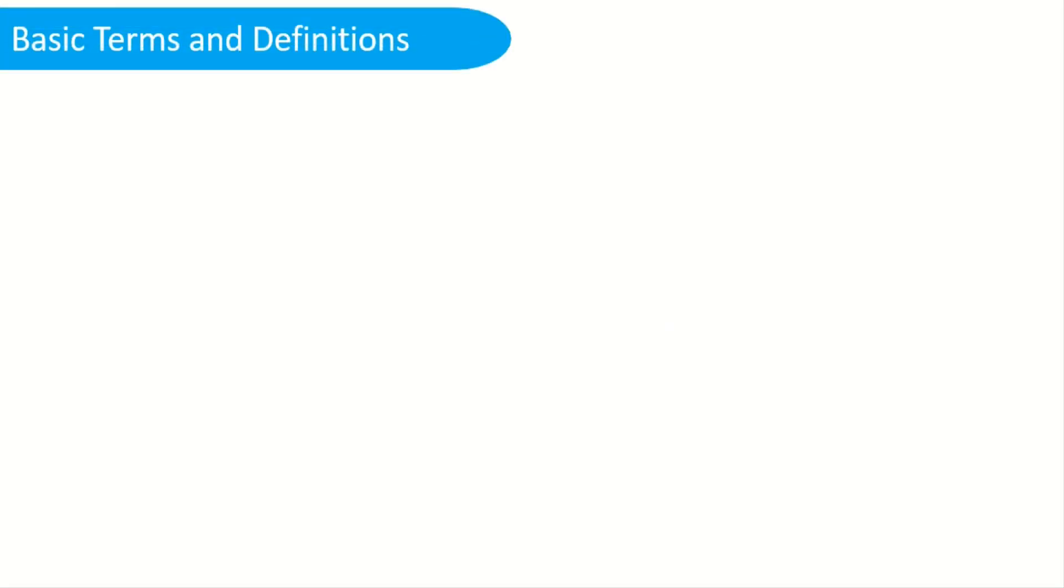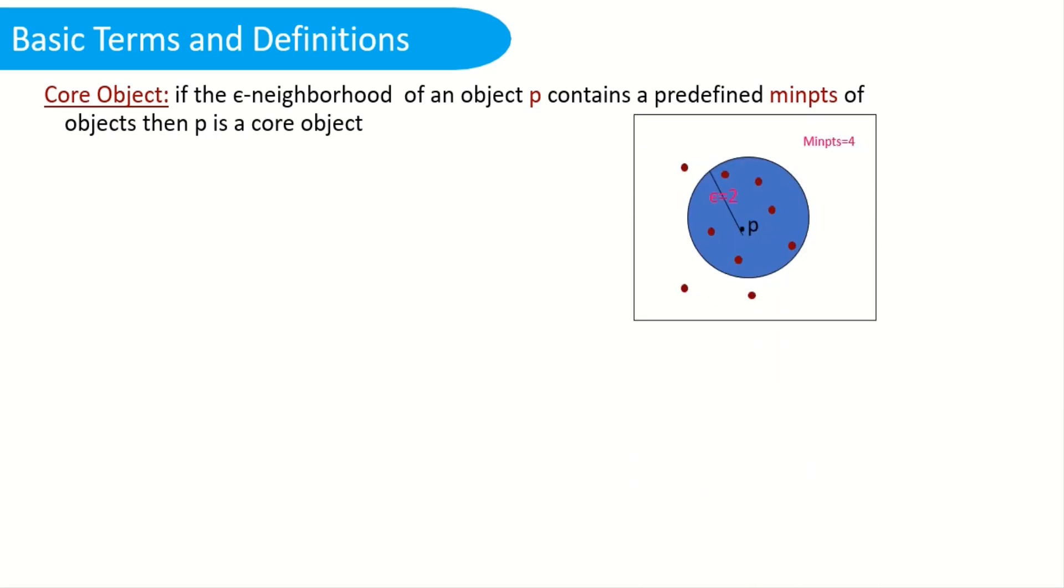Let's now have a look at basic terms and definitions that we use in DBSCAN. The first term is core object. If the epsilon-neighborhood of an object P contains a predefined minimum points of objects, then P is said to be a core object. Let's have a visualization. P is said to be a core object because it has satisfied the minimum points range, that is 4, in the epsilon-neighborhood region. In the epsilon-neighborhood region, we have 6 points and our requirement is 4, so P is a core object.